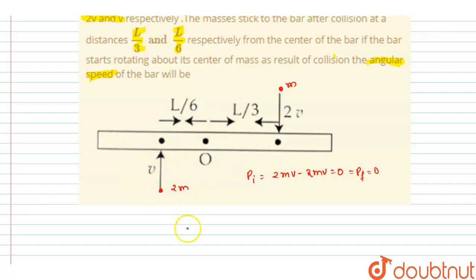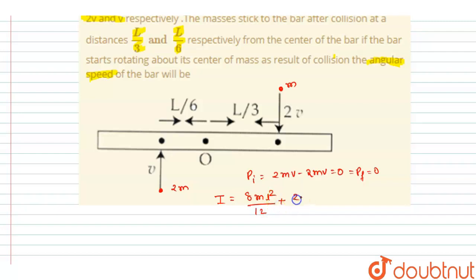Since the initial momentum is 0, the system won't have translational motion after the collision. The masses stick to the bar, so the total moment of inertia after collision is: for the rod, 8ml²/12, and for the two point masses, 2m(l/3)² plus m(l/6)², giving a total of 5ml²/6.